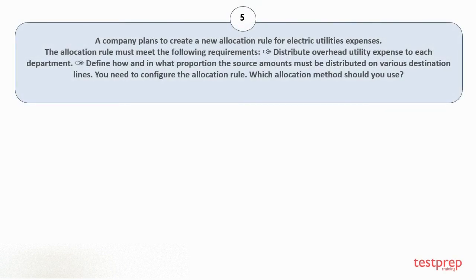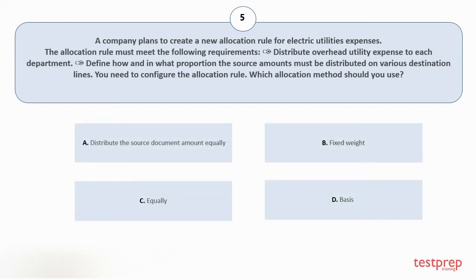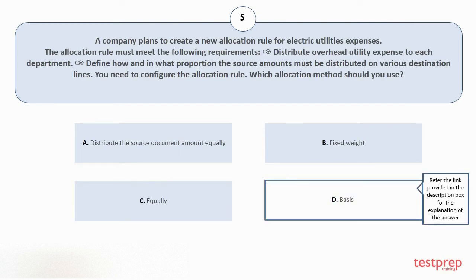Question number 5: a company plans to create a new allocation rule for electric utilities expenses. The allocation rule must meet the following requirements: 1. Distribute overhead utility expense to each department. 2. Define how and in what proportion the source amounts must be distributed on various destination lines. You need to configure the allocation rule. Which allocation method should you use? Your options are: A. Distribute the source document amount equally. B. Fixed weight. C. Equally. D. Basis. The correct answer is option D.